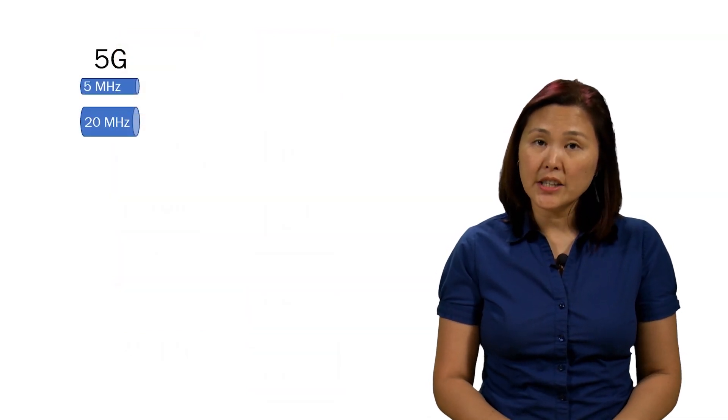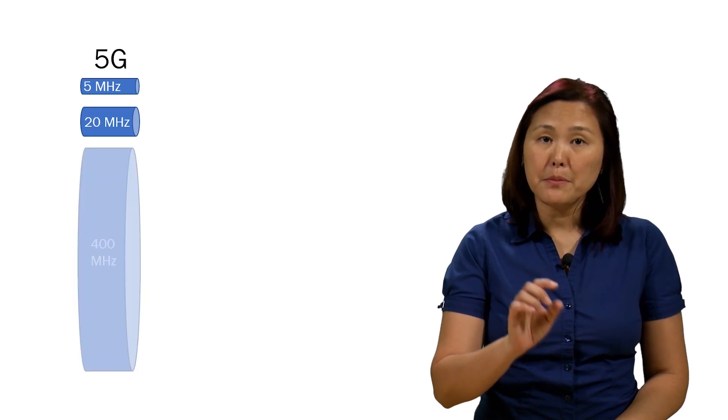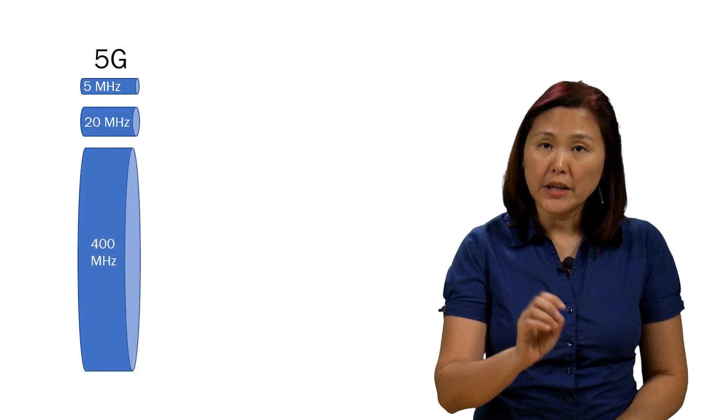Because 5G can use the 28 and 39 GHz ranges, or the millimeter wave spectrum, we can allocate a larger pipe. In initial 5G deployments, the pipe can be as large as 400 MHz.